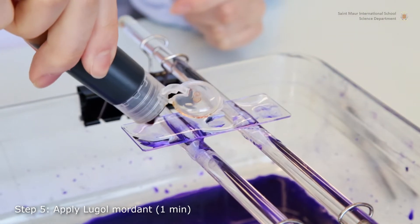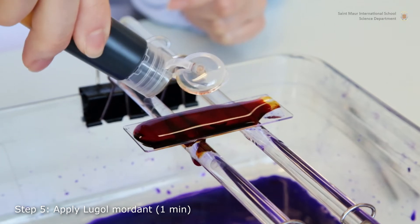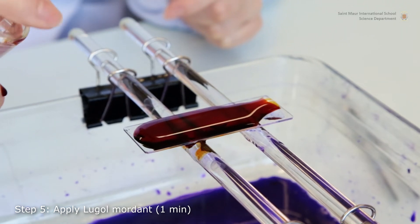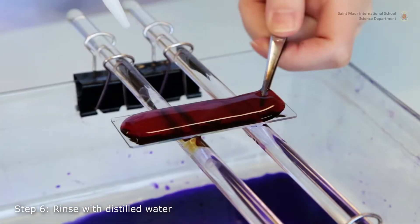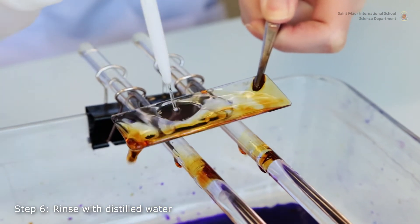Lugol reagent, which contains iodine, binds to crystal violet and traps it within the cell. It is left to bind for one minute. Like before, excess reagent is rinsed with distilled water.